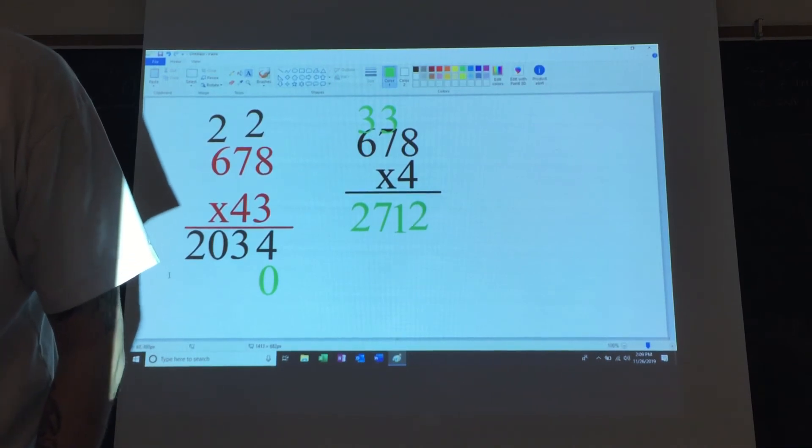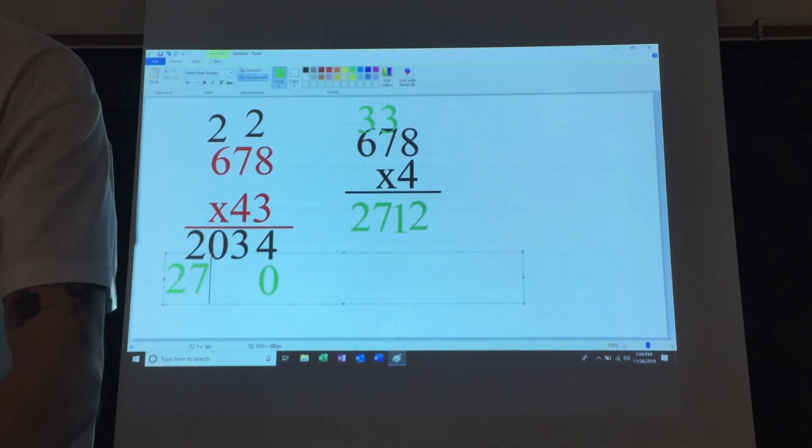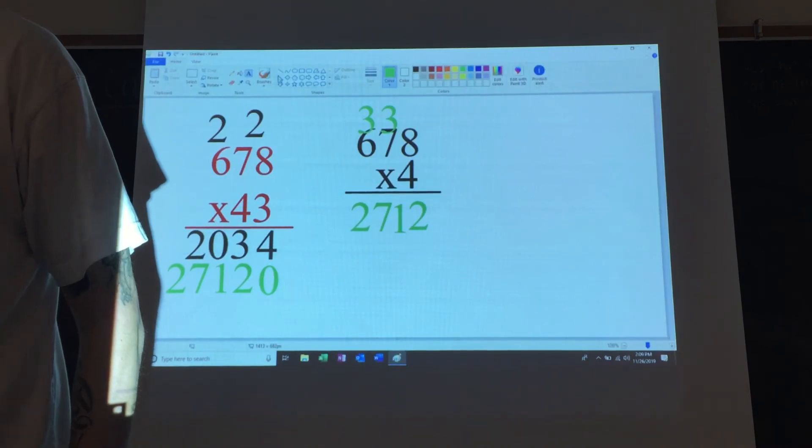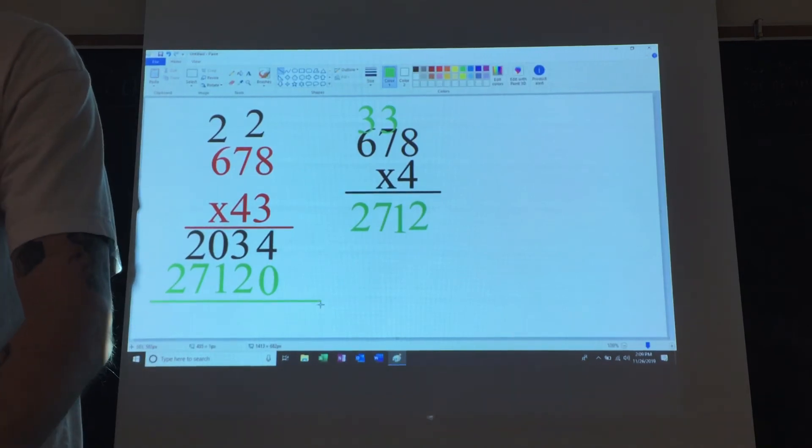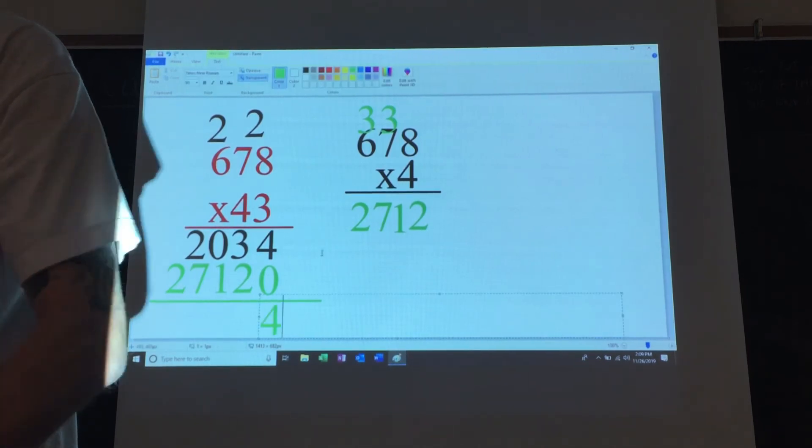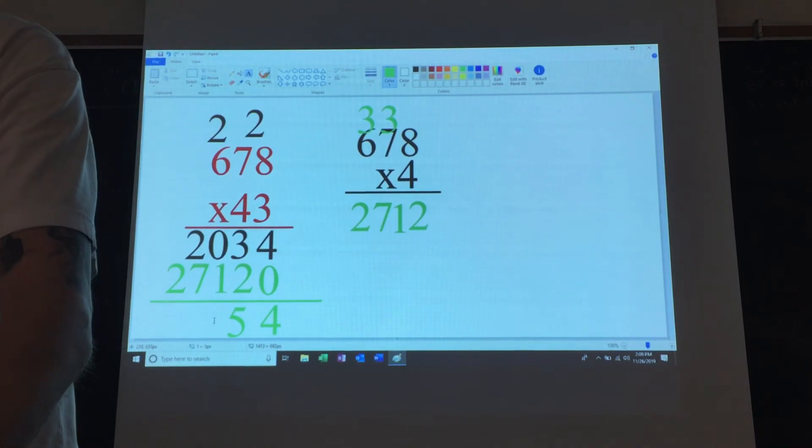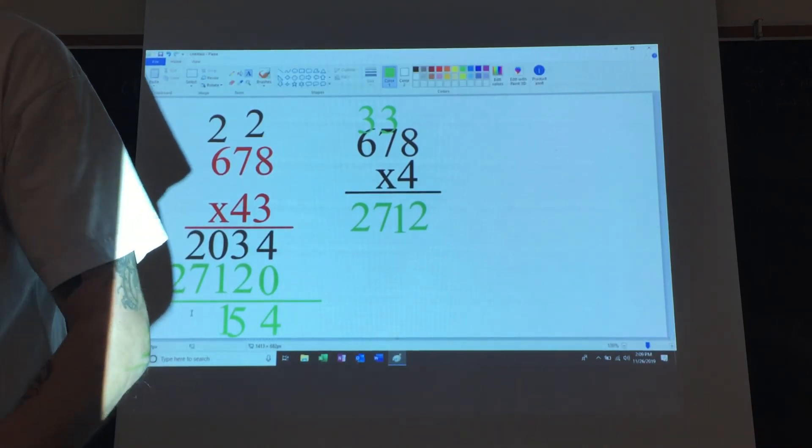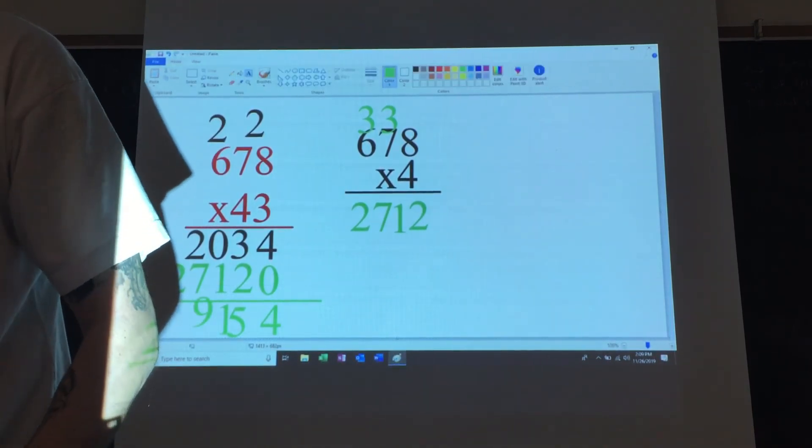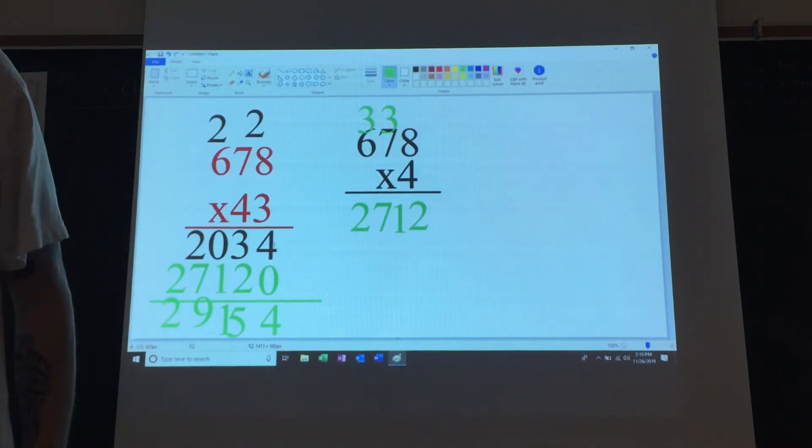Now we take those numbers 2-7-1-2 and we put them to the bottom there. Now we add them all up. 4 plus 0 is 4, 3 plus 2 is 5, 1 plus 0 is 1, 7 plus 2 is 9, and 2 plus 0 is 2.